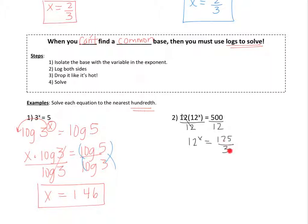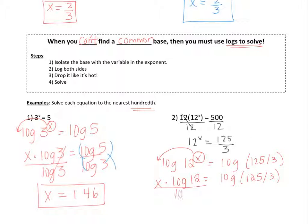Now, again, it's not going to be easy to find a common base. So, we're going to log both sides. So, log 12 to the x equals log, I'm going to put this like this, 125 over 3. Now, we're going to take the power, drop it like it's hot. So, x times log of 12 equals log of 125 over 3.